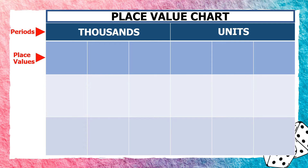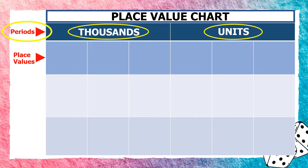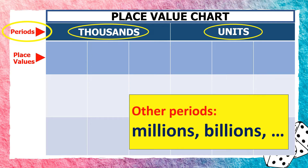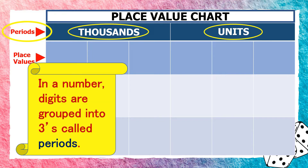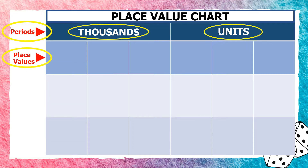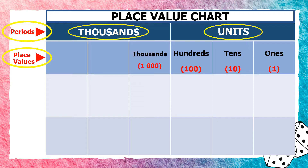To help us answer the problem, let us use the place value chart. This chart shows the periods, which refers to units and thousands. Aside from units and thousands, there are still other periods not included in this chart, like millions, billions, and so on. In a number, digits are grouped into threes called periods. Under units are the place values 1s, 10s, and 100s, and under thousands are the place values 1s, 10s, and 100s.